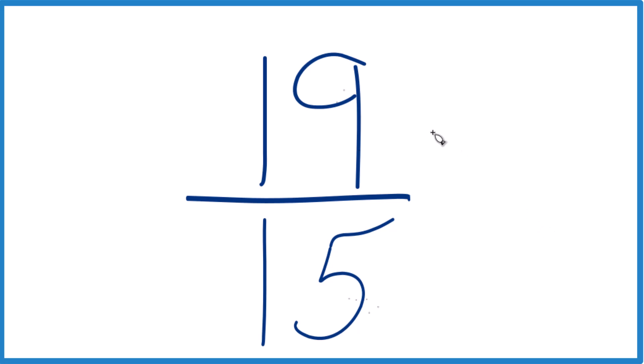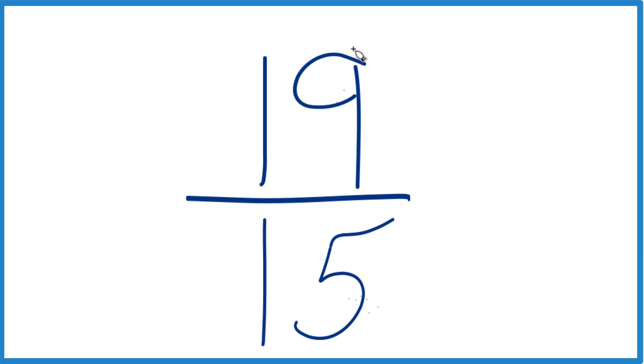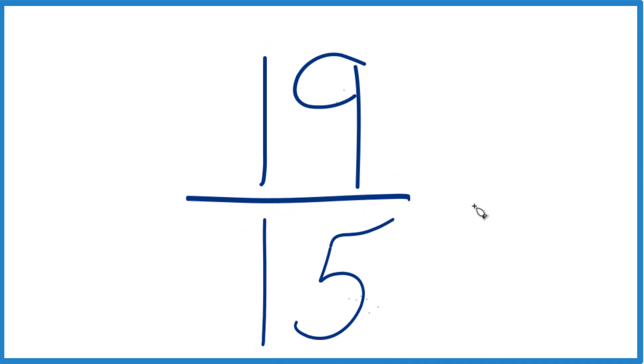But the only number that's going to go into 19 and 15 evenly is 1. And that means that 19/15, this is already simplified. We can't reduce this or simplify it any further. It's in lowest terms. But because the numerator 19 is larger than the denominator 15, this is an improper fraction. So we can also write it as a mixed number.